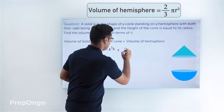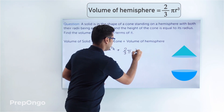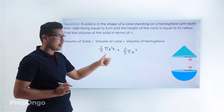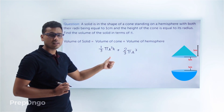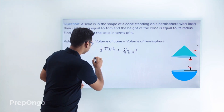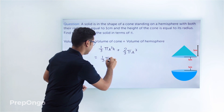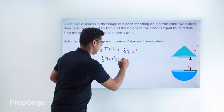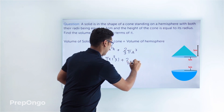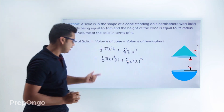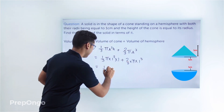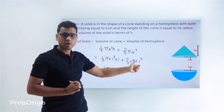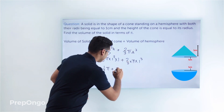Now r is given as 1 centimeter in both cases, and the height of the cone is also 1 centimeter. Substituting the values: volume equals (1/3)π × 1² × 1 plus (2/3)π × 1³. Solving this: (1/3)π × 1 × 1 gives (1/3)π, and (2/3)π × 1 gives (2/3)π.